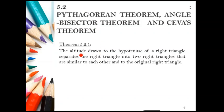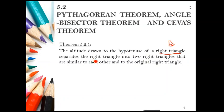Theorem 5.2.1 states that the altitude drawn to the hypotenuse of a right triangle separates the right triangle into two right triangles that are similar to each other and to the original right triangle. This theorem is only applicable for right triangles.